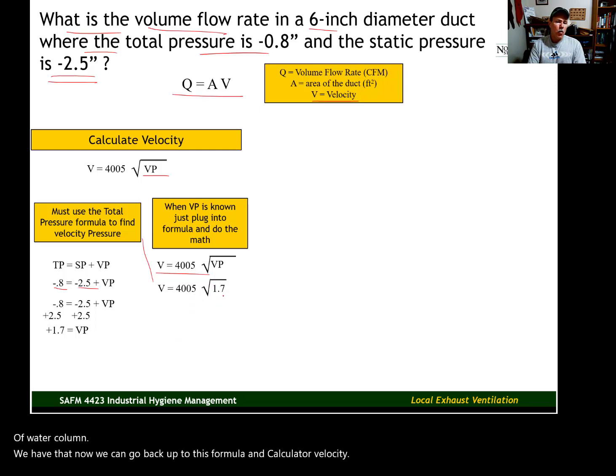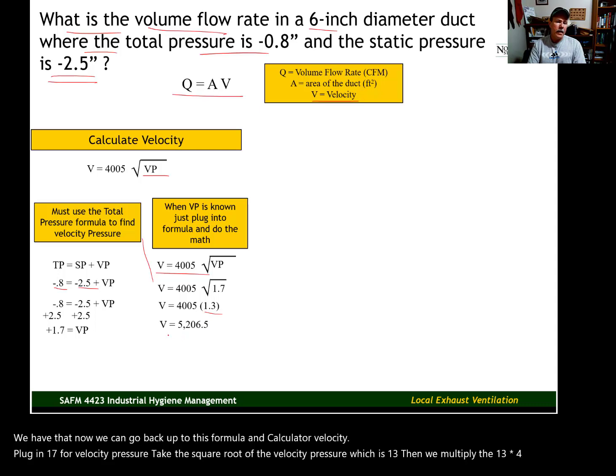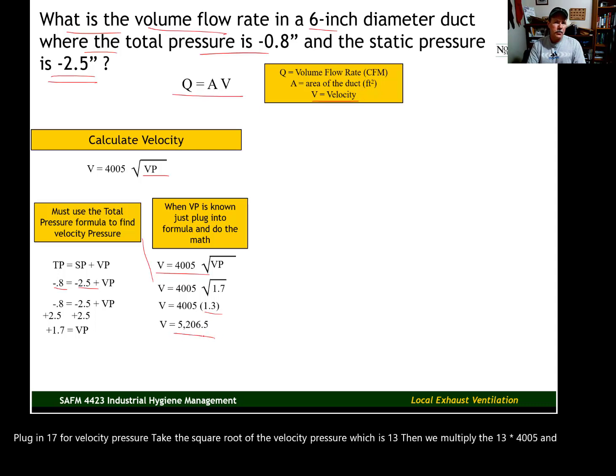Plug in 1.7 for our velocity pressure. Take the square root of the velocity pressure, which is 1.3. Then we multiply the 1.3 times 4005. And there's our velocity, 5206.5. Now we have the velocity that we need to calculate the flow rate.